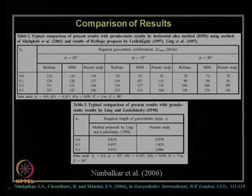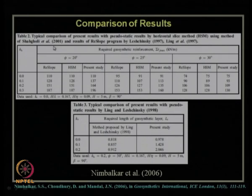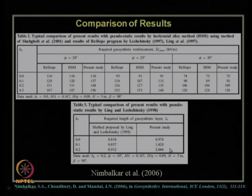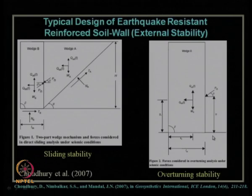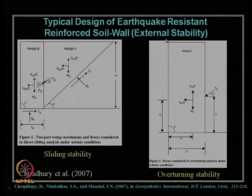Results were compared to previous researchers who used the pseudo-static approach, including Ling and Lechensky's results and Ling et al. 1997 and Chagoli et al. 2001 results for various seismic acceleration coefficients. The present study using pseudo-dynamic approach always gives a critical dimensional design, showing the importance of the pseudo-dynamic approach. The external stability criteria for reinforced soil walls divided the reinforced soil zone into two portions: triangular wedge A and rectangular wedge B, considering both sliding and overturning stability.